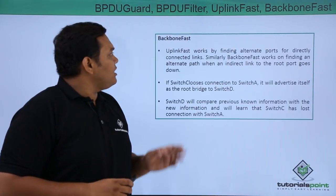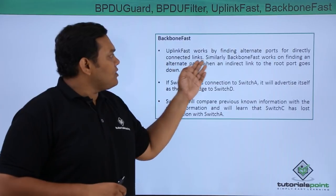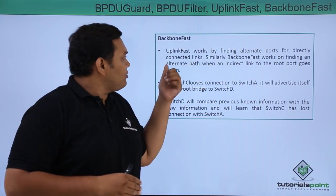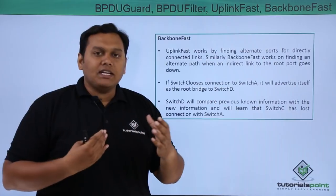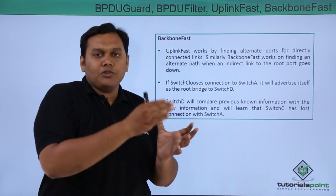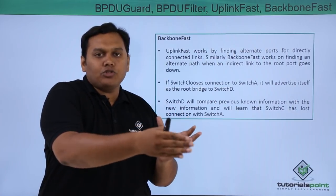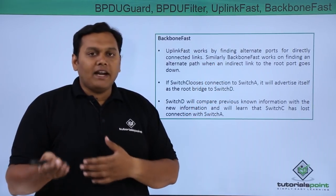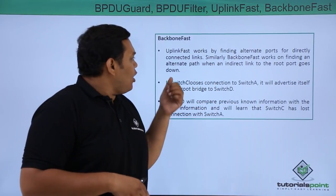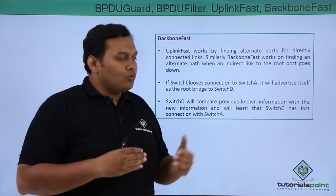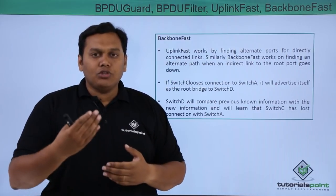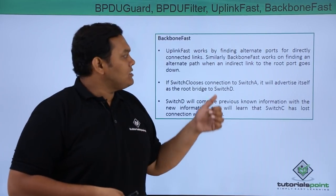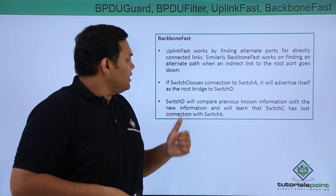Coming to backbone fast: uplink fast works on finding alternative ports on switches for directly connected links. Similarly, backbone fast works on finding an alternative path when an indirect link to the root port goes down.